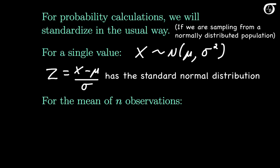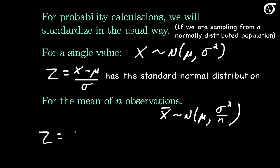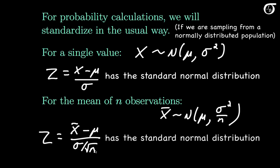For probability calculations involving the mean of n observations, X bar is distributed normally with a mean of mu and a variance of sigma squared over n. To standardize here, we let the random variable Z equal X bar minus its mean mu, divided by the standard deviation of X bar, which is sigma over the square root of n. Then the random variable Z will have the standard normal distribution.